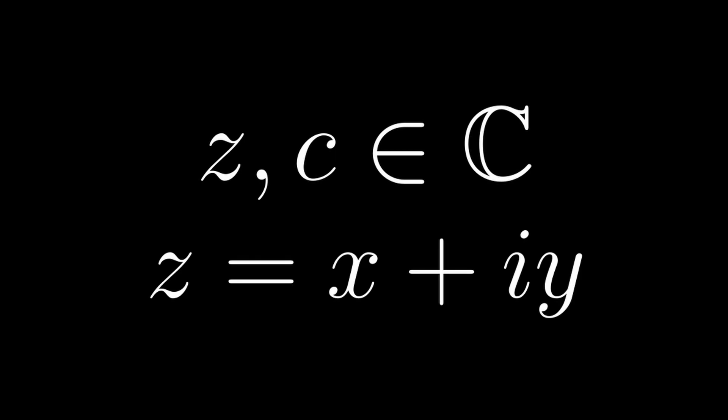What should be mentioned at this point is that z and c are both complex numbers, meaning that they have a real and an imaginary part. This is relevant as it allows for a nice visual representation. Take the complex plane, real numbers on the horizontal, the imaginary numbers on the vertical axis, and for each point let the corresponding value be c.